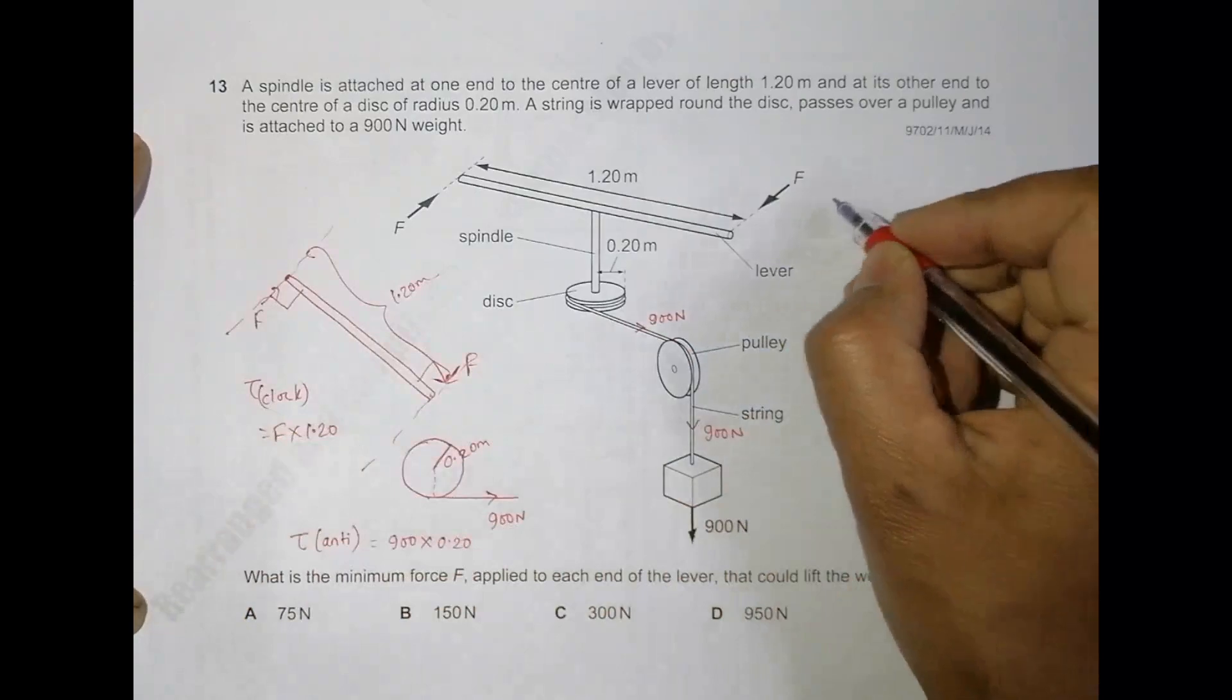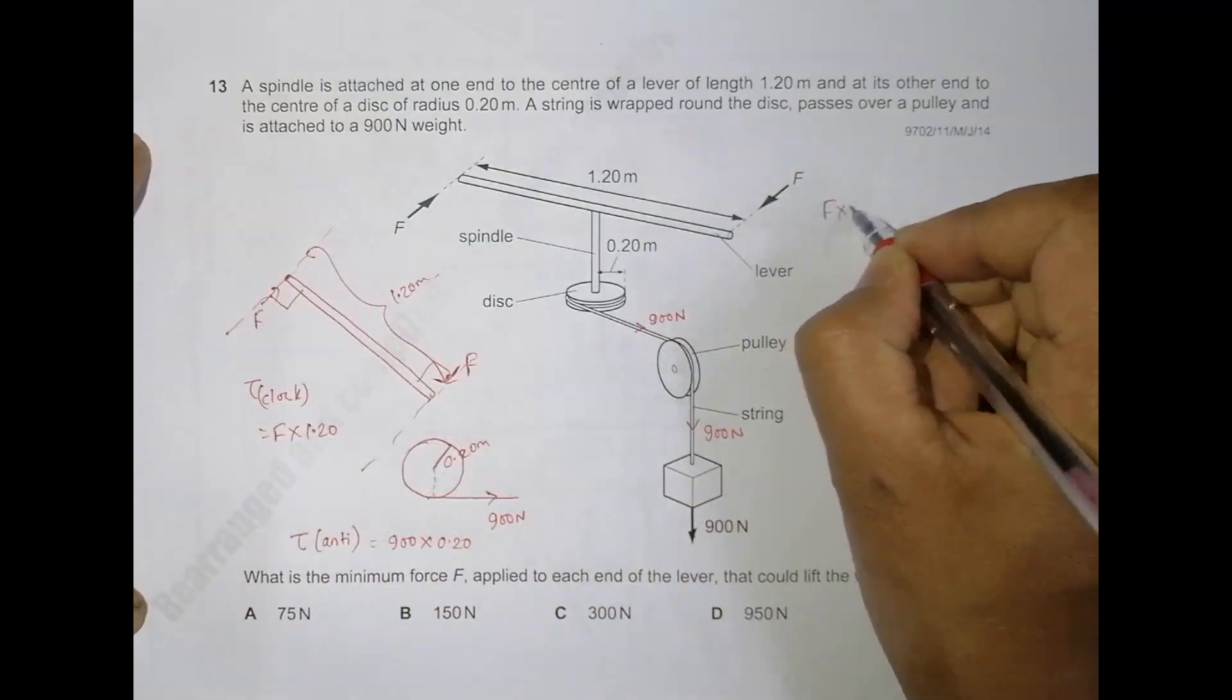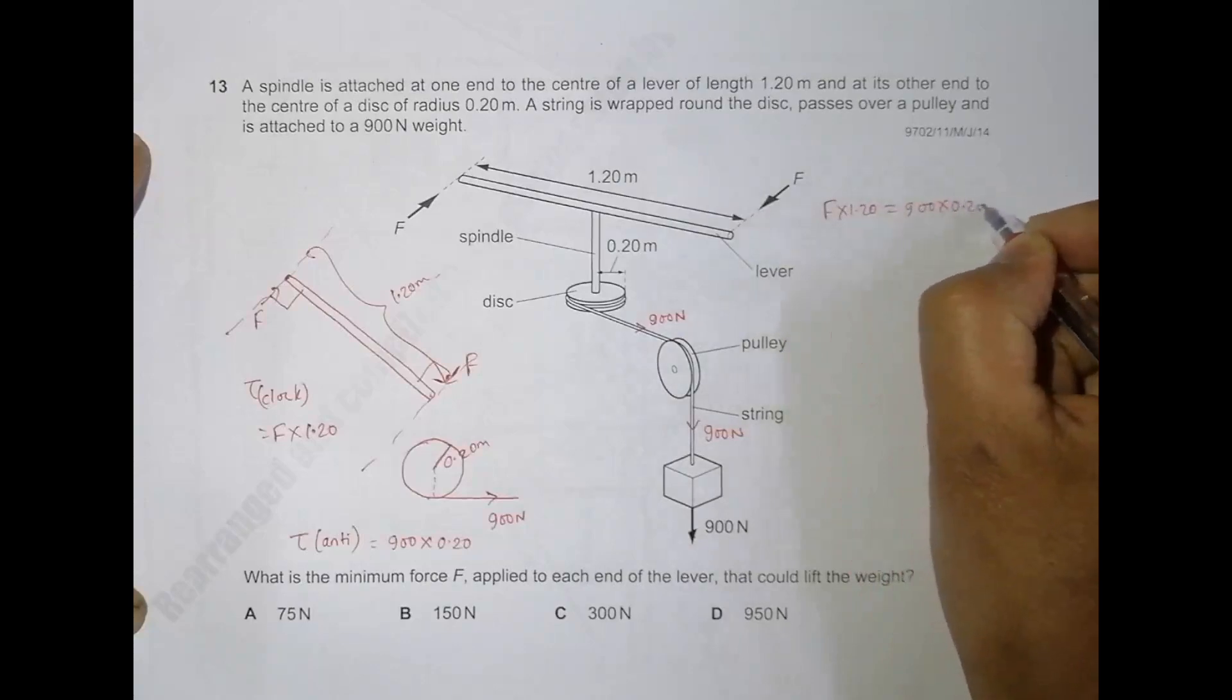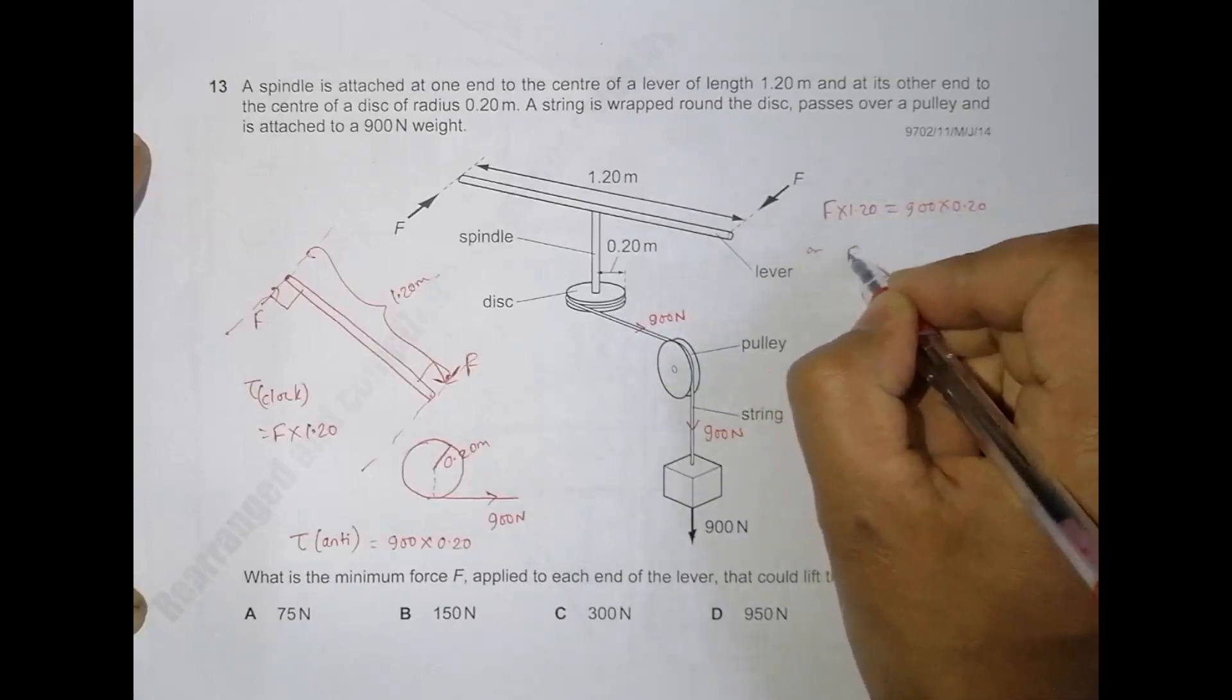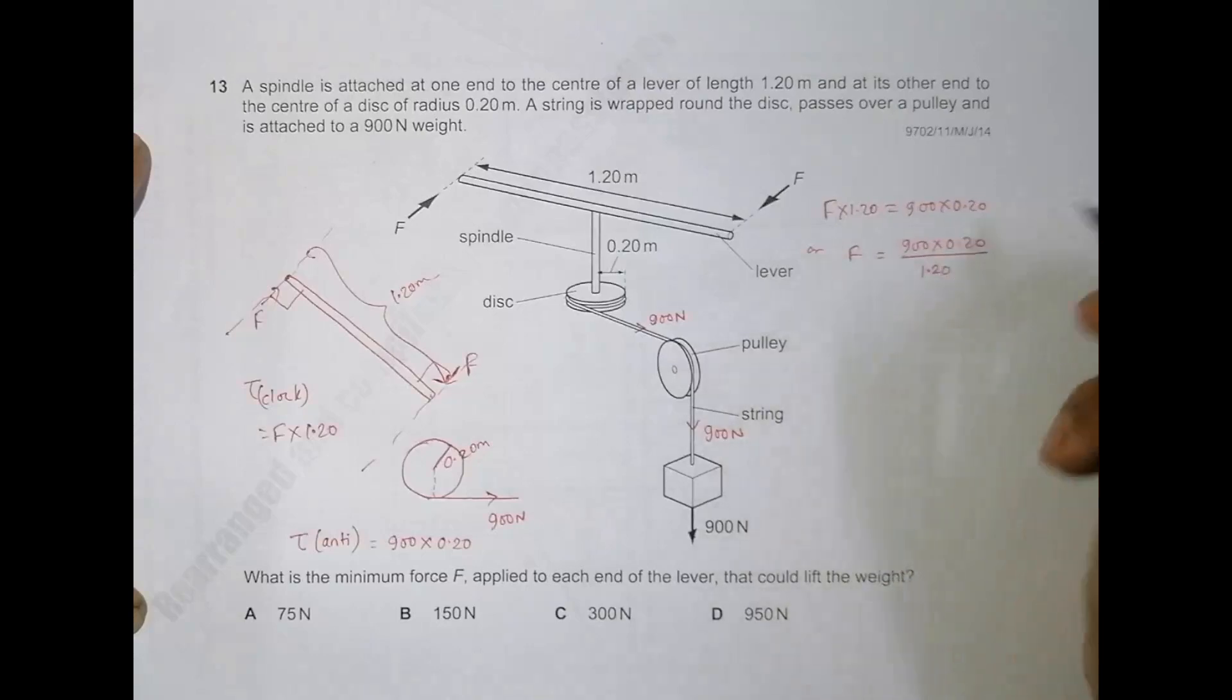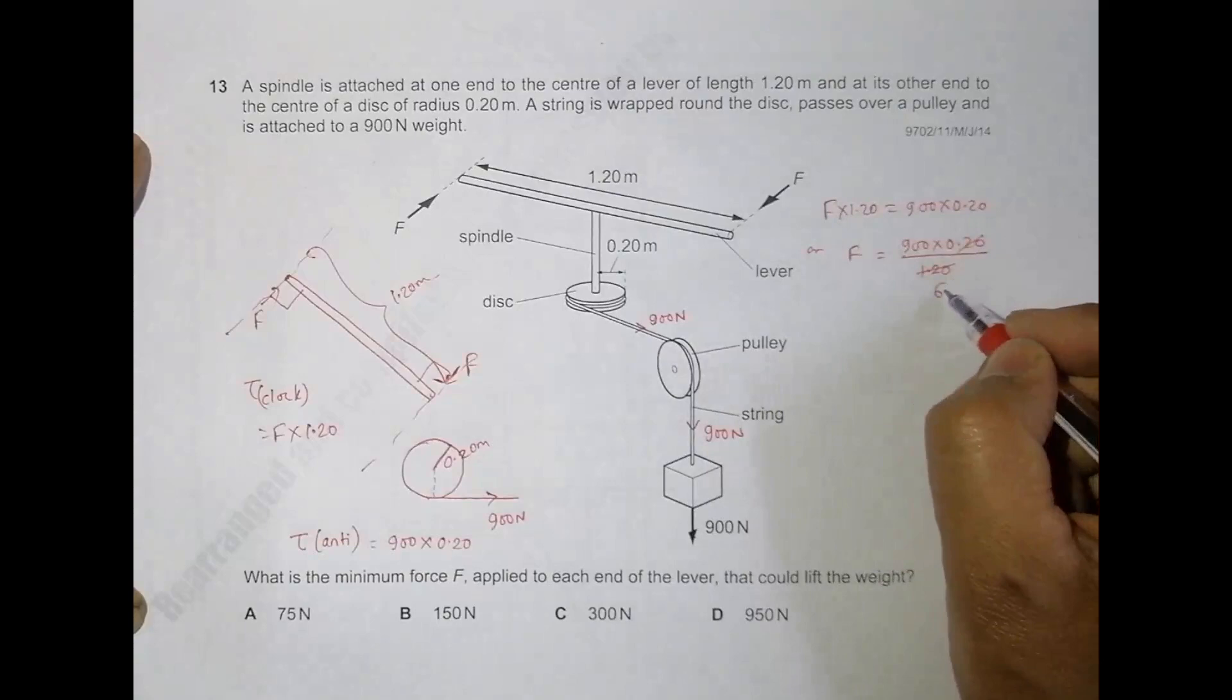I must have F into 1.20 equal to 900 into 0.20, which makes F equal to 900 into 0.20 by 1.20. This gives us 150 Newton.